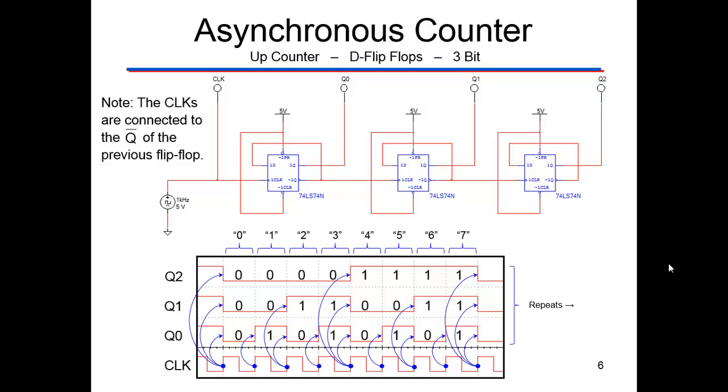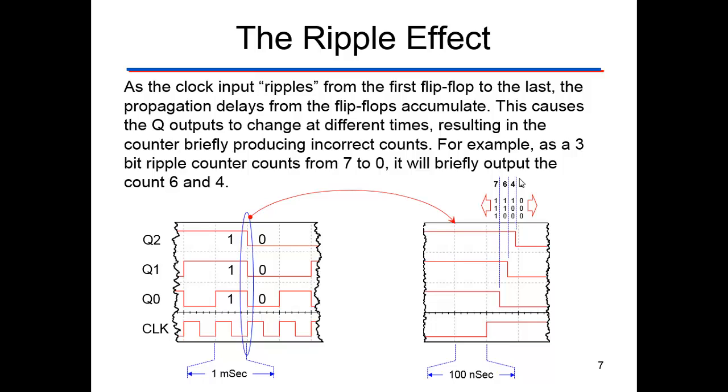This would be a three bit counter. That would be two to the three. It would count from zero to seven. It's the same thing. The clocks all come from the not Q of the previous clock.